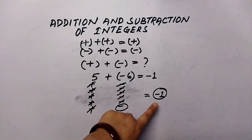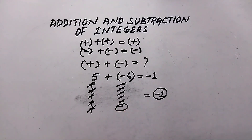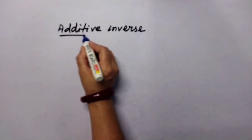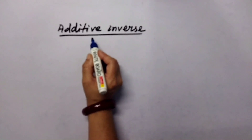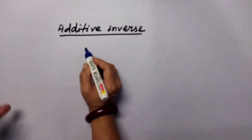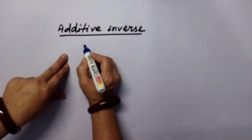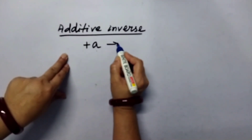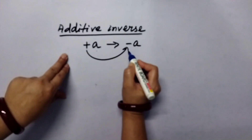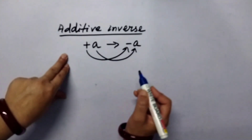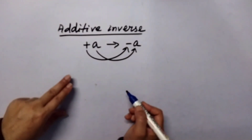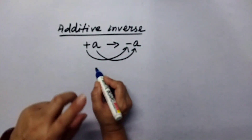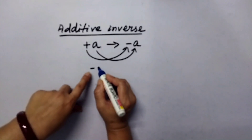Before learning subtraction, we must know what the additive inverse of an integer is. Additive inverse means its opposite sign. If we take one positive integer, positive a, its additive inverse will be negative a — only the sign changes, with the same absolute value. The number does not change, only the sign. And when you add a number with its additive inverse, the result must always be zero.